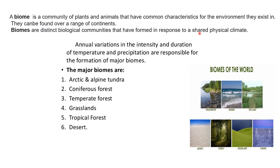Annual variation in the density and duration of temperature and precipitation are responsible for the formation of major biomes. When there is more rainfall there is forest formation; when there is less rainfall there is desert formation. There are six major biomes: arctic (where there is no fall), coniferous forest, temperate forest, grasslands, tropical forest and deserts.